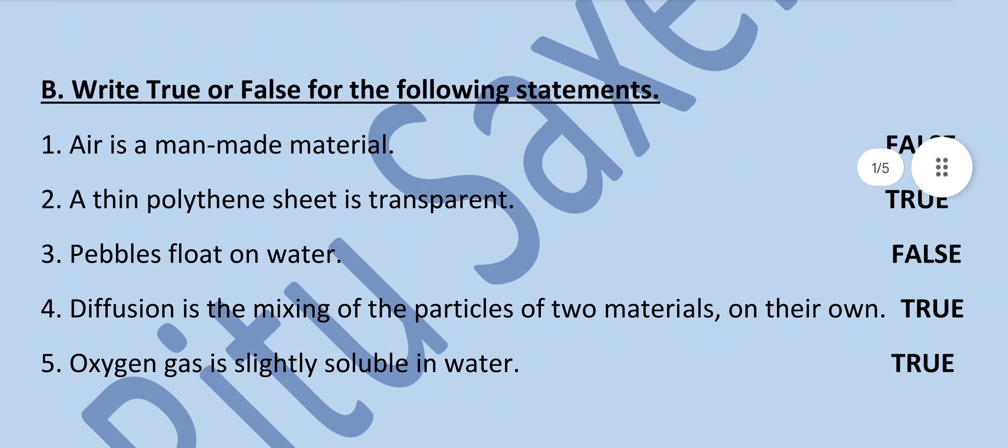True and False section: A man-made material — this is false. A thin polythene sheet is a transparent material — this is true. Pebbles float on water — false. Diffusion is a mixing of the particles of two materials on their own — this is true.